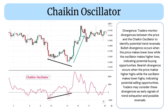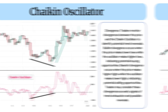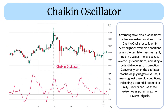Divergence: Traders monitor divergences between the price and the Chaikin Oscillator to identify potential trend reversals. Bullish divergence occurs when the price makes lower lows while the oscillator makes higher lows, indicating potential buying opportunities. Bearish divergence occurs when the price makes higher highs while the oscillator makes lower highs, indicating potential selling opportunities. Traders may consider these divergences as early signals of trend exhaustion and possible reversals.